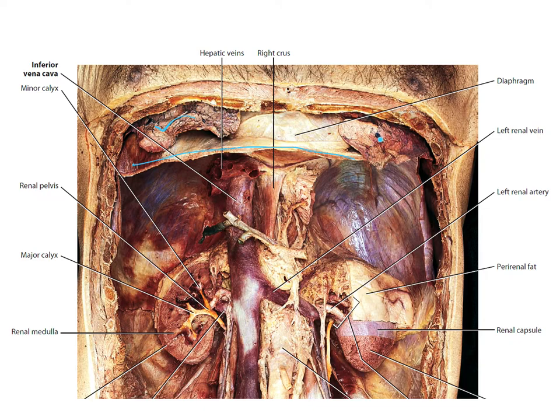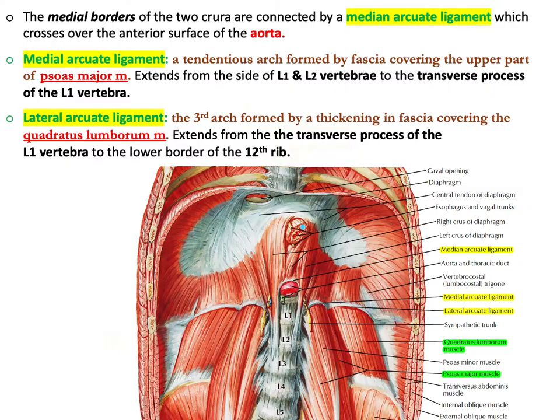Here in the cadaver specimen you can see the diaphragm — it has already been cut. You can see the inferior border of the right and left lungs, the central part of the diaphragm where the pericardium is fused, the inferior vena cava, the right crus, the left crus, the esophagus, and the aorta.